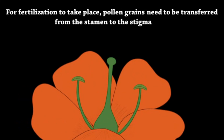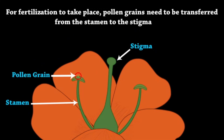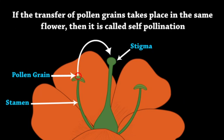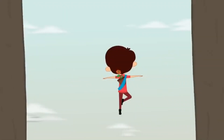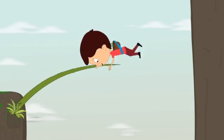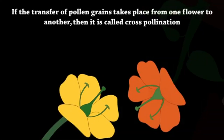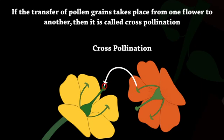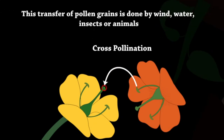For fertilization to take place, pollen grains need to be transferred from the stamen to the stigma. If the transfer of pollen grains takes place in the same flower, then it is called self-pollination. If the transfer takes place from one flower to another, then it is called cross-pollination. This transfer of pollen grains is done by wind, water, insects, or animals.